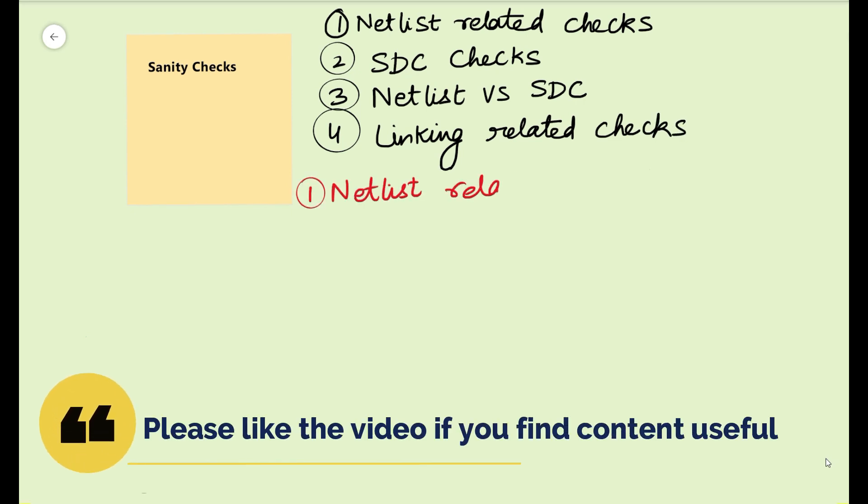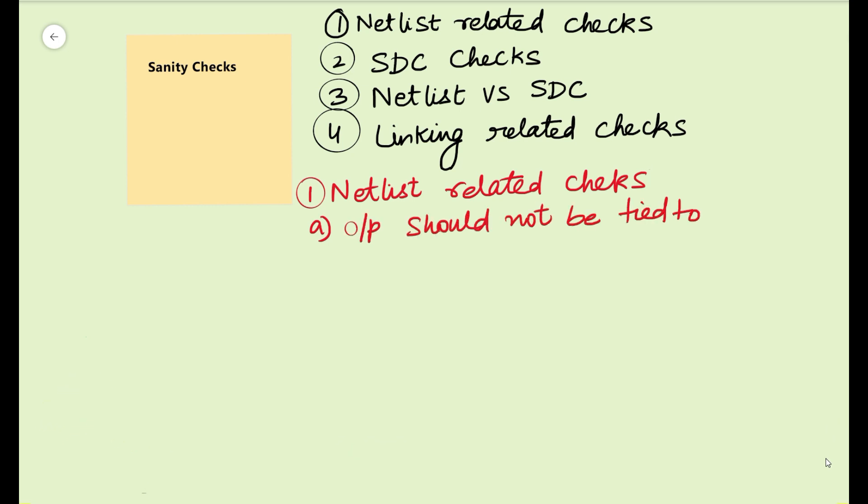Let us first understand netlist related checks. The first check is output should not be tied to ground. To understand that, let's take this CMOS for example. If your Q pin output is tied to ground, it will always be zero. Whatever input you give, it will create a path from VDD to ground, which is a PG short, because VDD current will always go from VDD to Q that is zero.